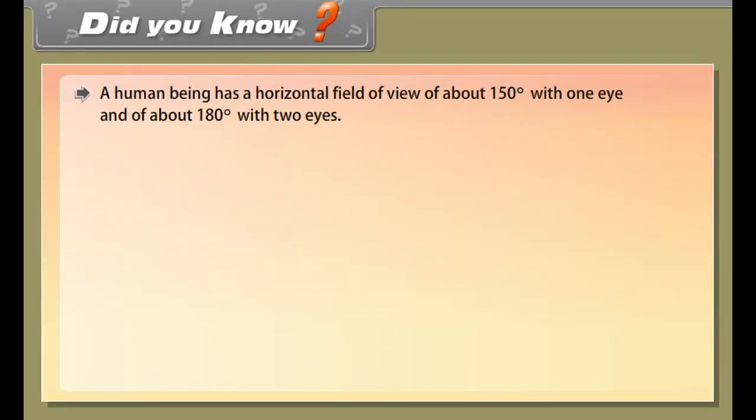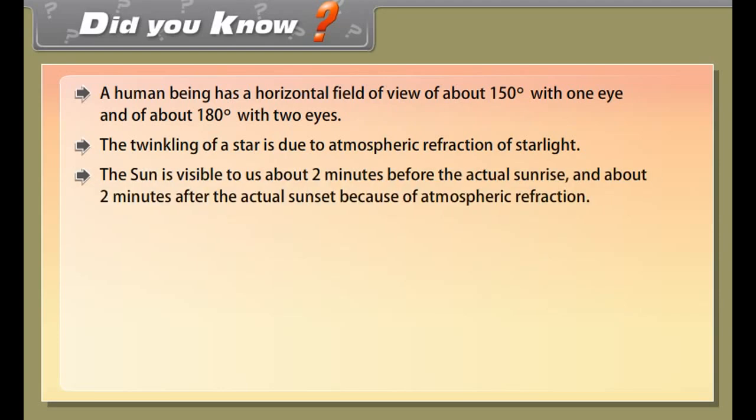Tyndall effect: When a light is made to fall on a colloidal solution, it gets scattered by the colloidal particles and hence the path of light becomes visible. This is termed as Tyndall effect. Like in a dark room, when a hole is made and light is allowed to pass through it, then we are clearly able to see the path of light as well as the dust particles which otherwise are not seen in the air.